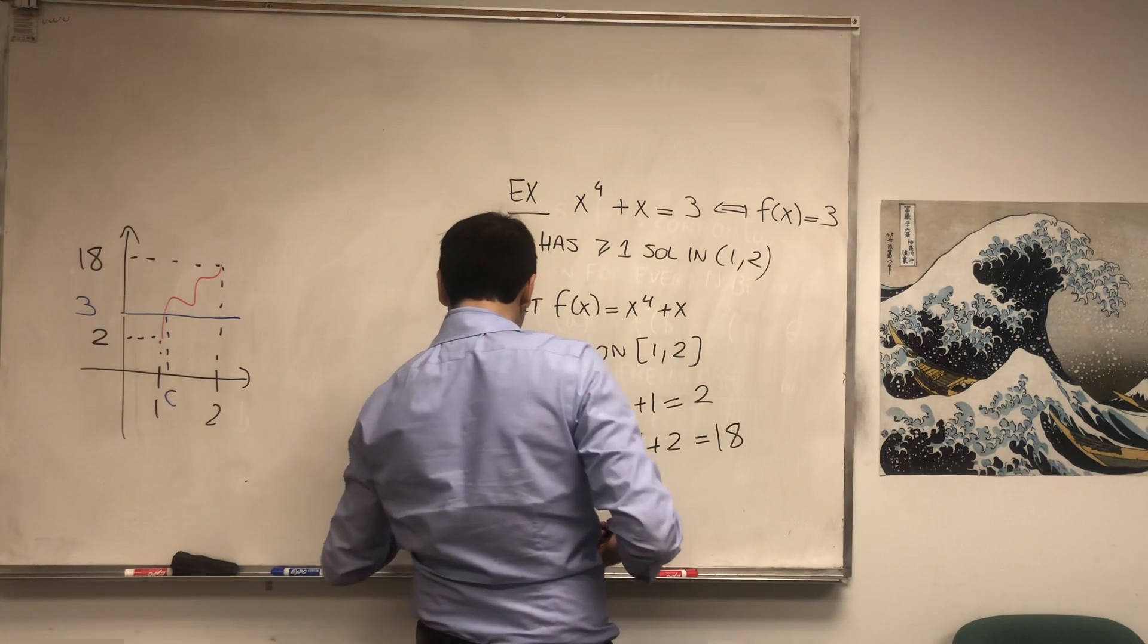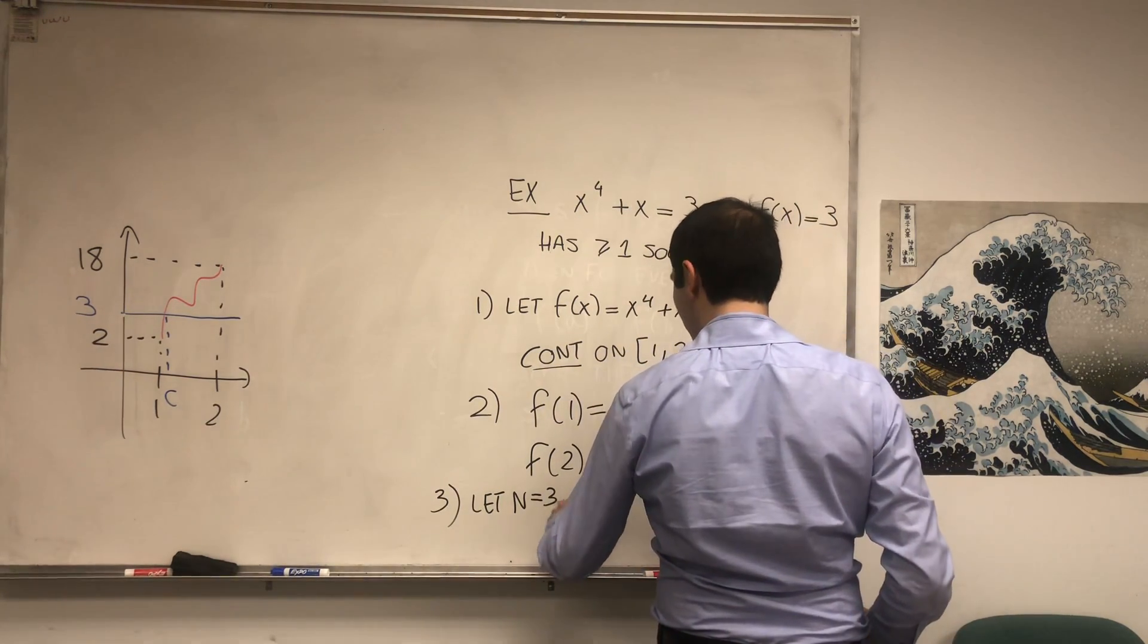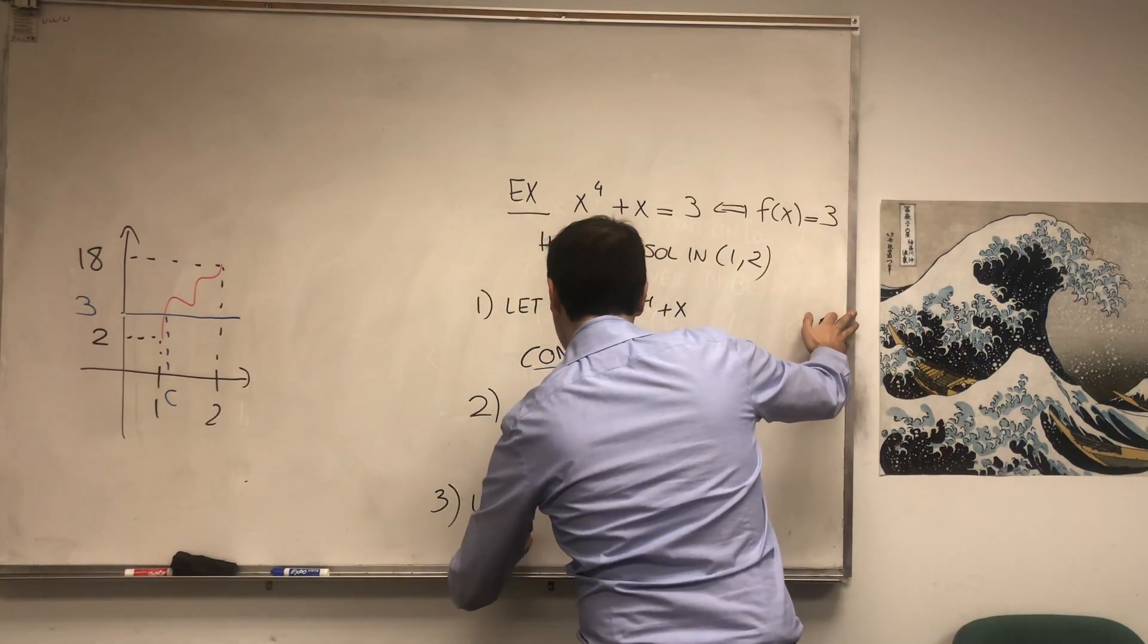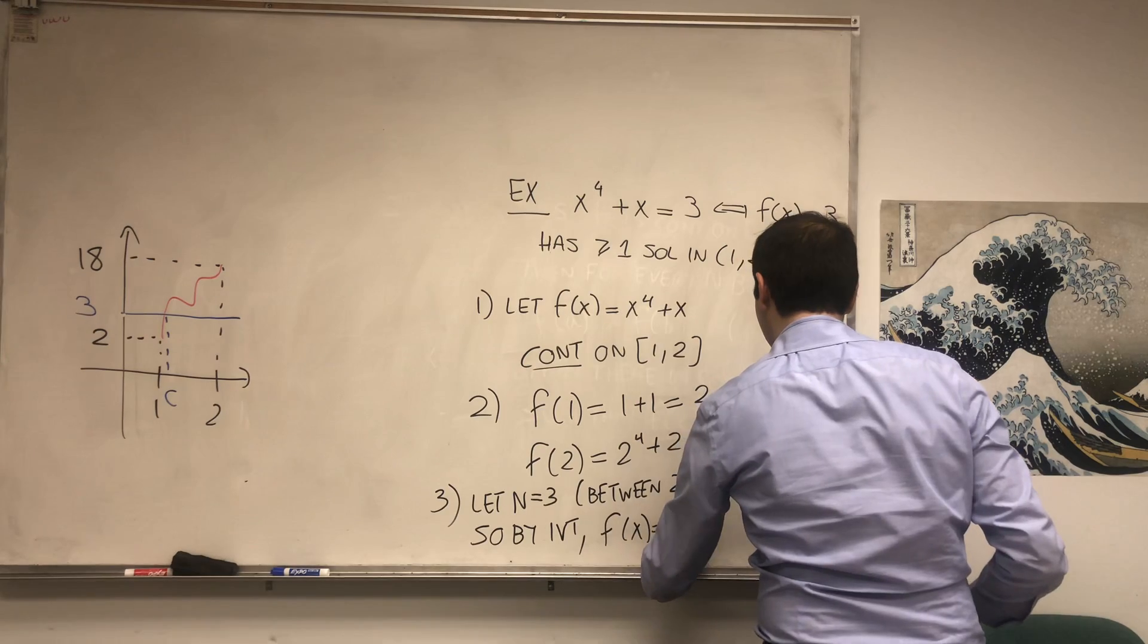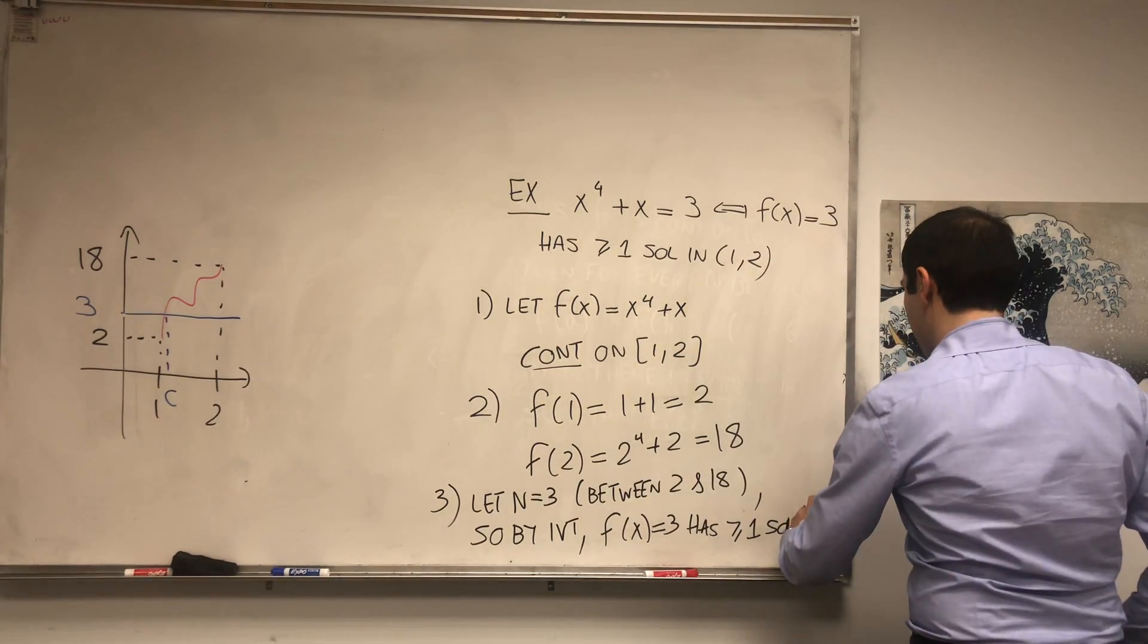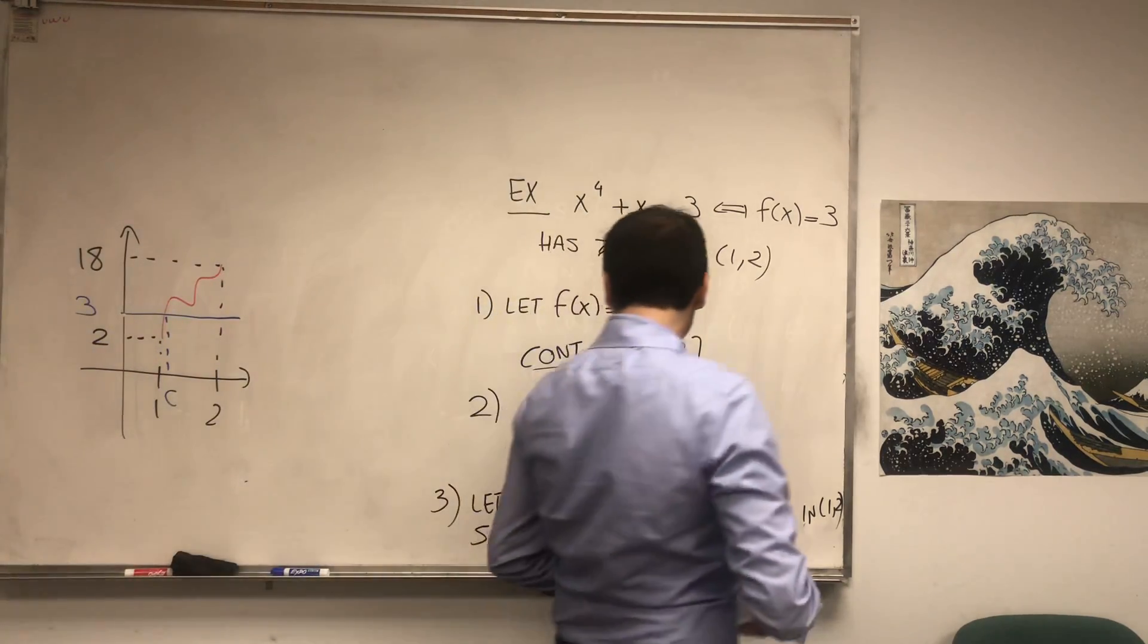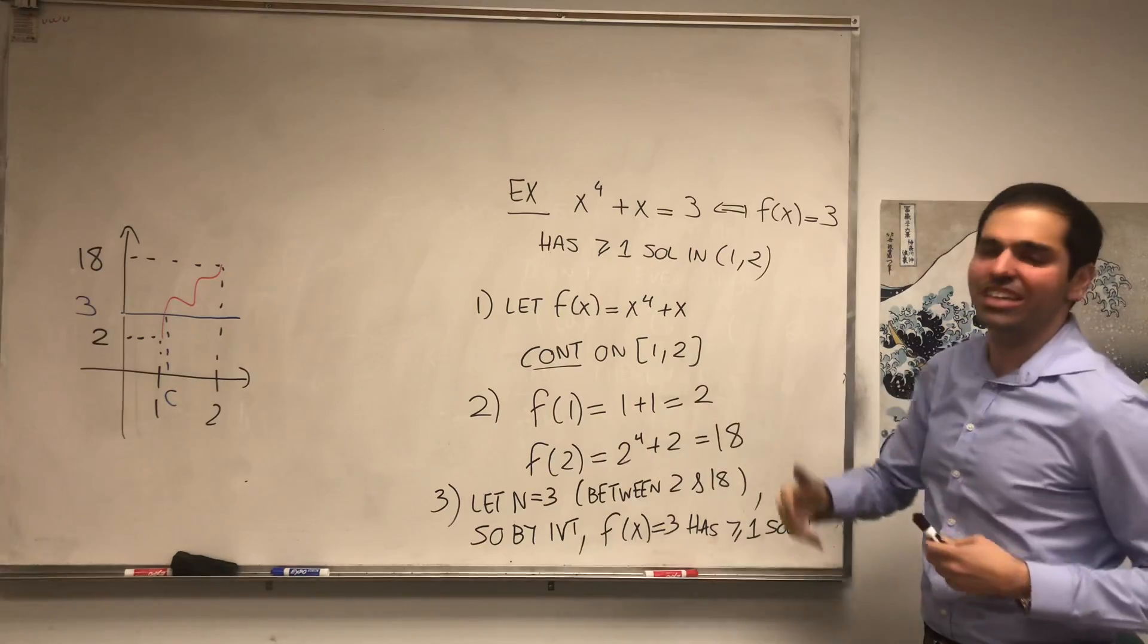So in other words, let n be 3. And that n is between 2 and 18. So by the Intermediate Value Theorem, f(x) = 3 has at least one solution in the interval [1,2]. In other words, there's at least some point where x^4 + x equals 3. So you see, this is very interesting because we're able to show that this equation has a solution without even solving it.